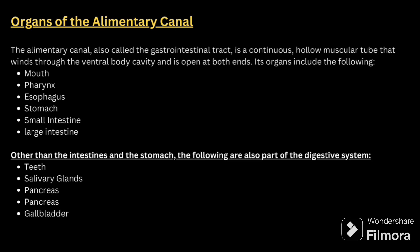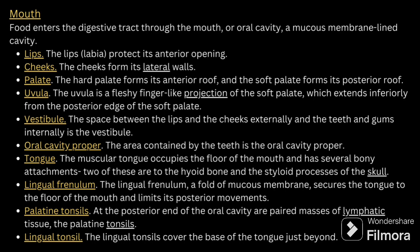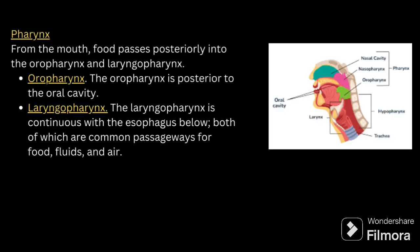Food enters the digestive tract through the mouth or the oral cavity. The parts of the mouth include lips, cheeks present in the lateral wall, palate — we have hard palate and soft palate — and the uvula, which is a fleshy finger-like projection in the soft palate. The vestibule is the space between the lips and the cheek. The oral cavity proper contains teeth, tongue, lingual frenulum, palatine tonsil, and lingual tonsil.